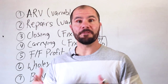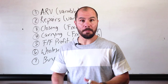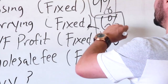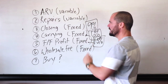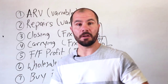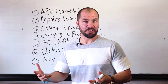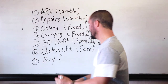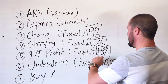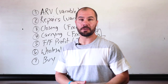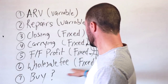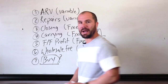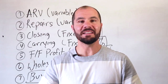Number five is the fix and flip profit — how much is the fix and flipper going to make on the deal? I conservatively budget 15% of ARV towards fix and flip profit on every deal. If you're wholesaling, you need to add in your wholesale fee on top of that. I suggest your minimum wholesale fee be $10,000 minimum — you should be going into deals as a wholesaler trying to make at least $10,000. And finally, number seven is our buy price — what is the buy number factoring in all of these things?